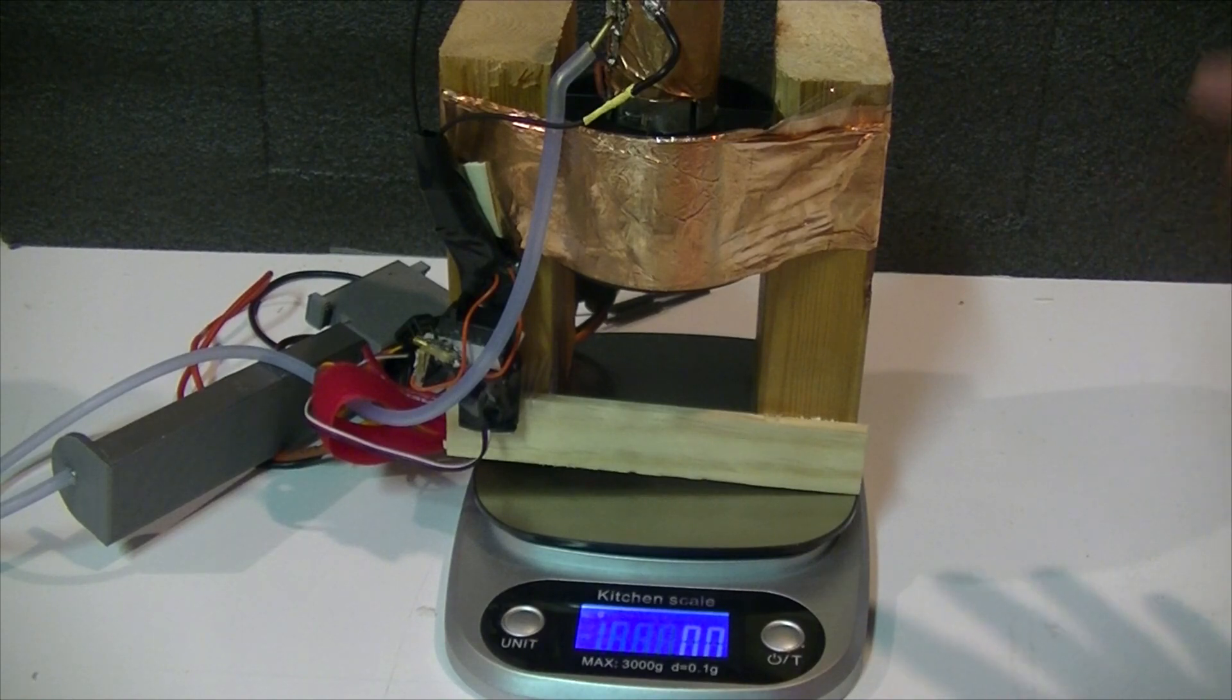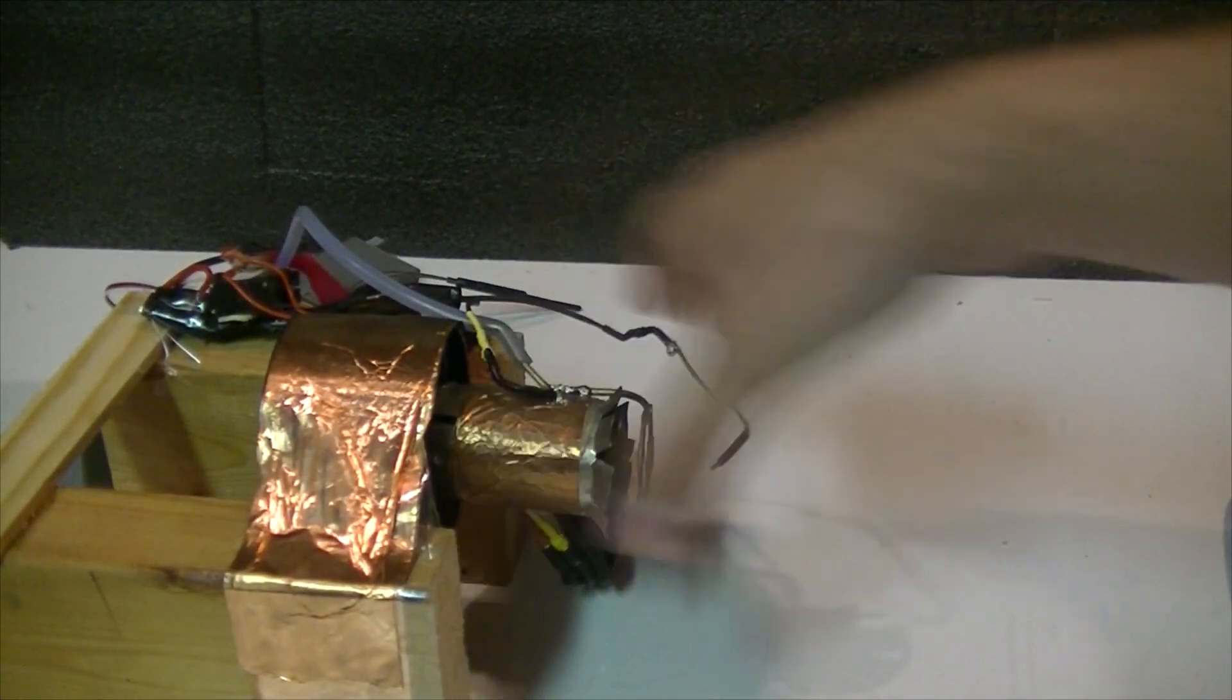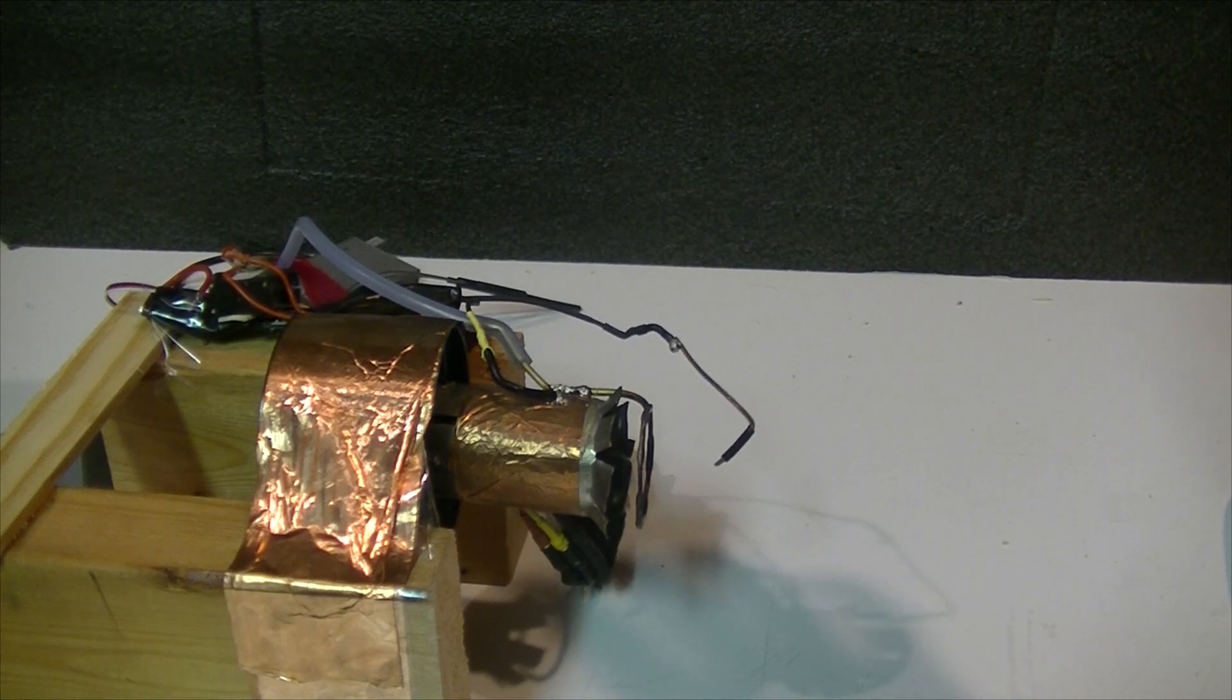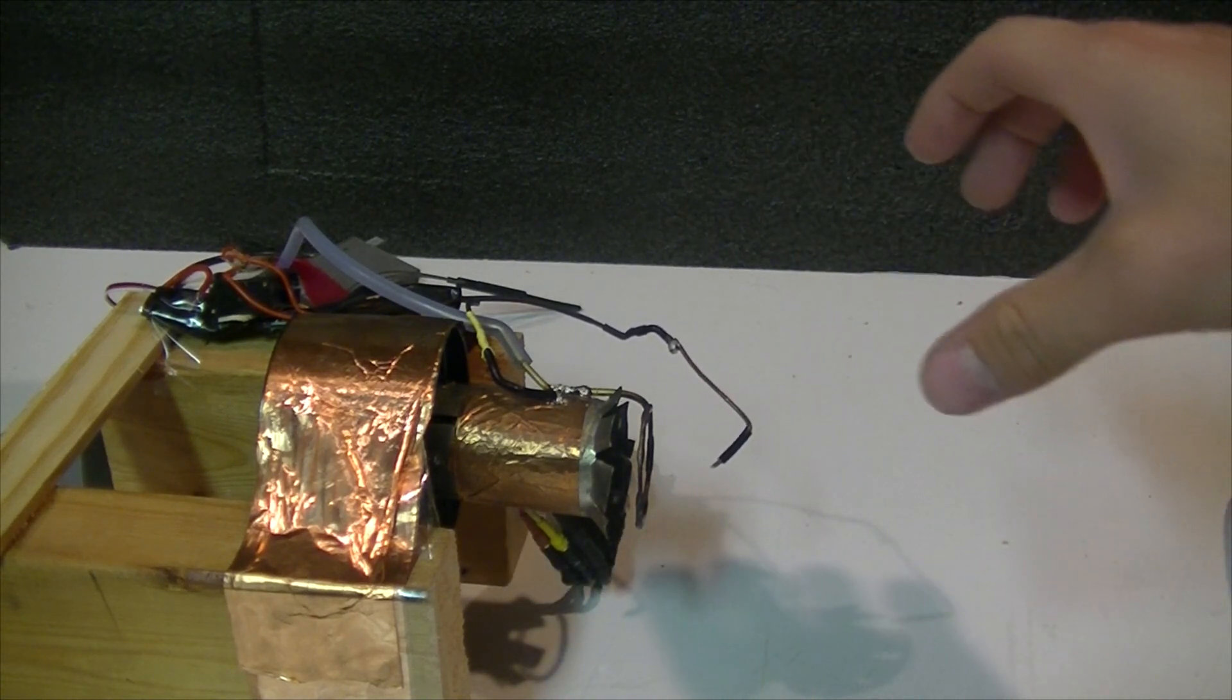Right now my biggest problem is not having any sort of thrust tube, so I'm going to make one. I'll probably use aluminum foil on the inside with hard cardstock paper so it won't melt.